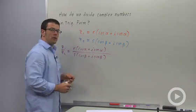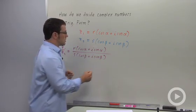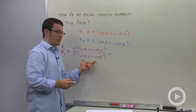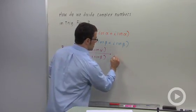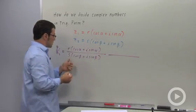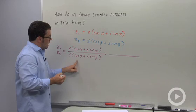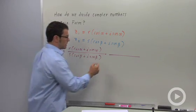And you remember the trick when you're dividing complex numbers to multiply the top and bottom by the conjugate of the denominator. So just this part, you don't have to worry about the S. The conjugate of this denominator is cosine beta minus I sine beta.